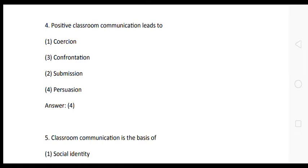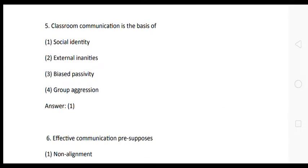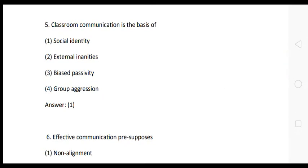Question 5: Classroom communication is the basis of — options: (1) social identity, (2) external entities, (3) bias possibility, (4) group aggression. The correct answer is option 1: social identity. Classroom communication is the basis of social identity.